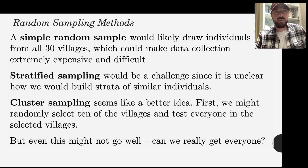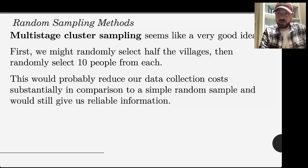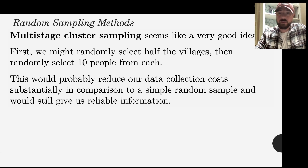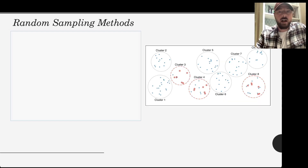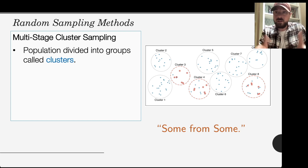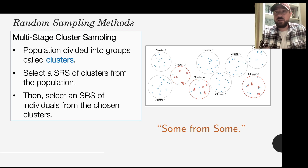So there's another method called multi-stage cluster sampling. We could first randomly select some villages — say half — then select 10 individuals from each of those villages. This would substantially reduce data collection costs compared to a simple random sample and still give reliable information. Multi-stage cluster is 'some from some': some from all is stratified, all from some is cluster, and some from some is multi-stage cluster. You take a simple random sample of clusters, then a simple random sample of individuals within each selected cluster.